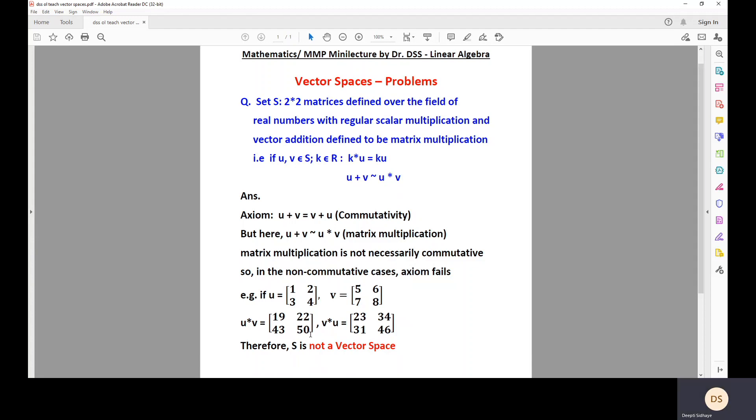And then if you try to find out the product V into U, which is nothing but in this particular example, addition of V plus U, the product comes out to be 23, 34, 31, 46.